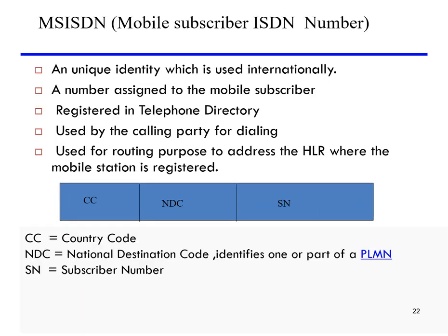MSISDN, or Mobile Subscriber ISDN Number, is a unique internationally used identity assigned to the mobile subscriber and registered in telephone directories. It is the number used by the calling party for dialing and is used for routing purposes to address the HLR where the mobile station is registered. It consists of three components: country code, national destination code representing the PLMN, and the subscriber number.